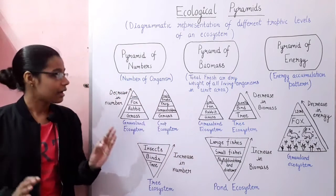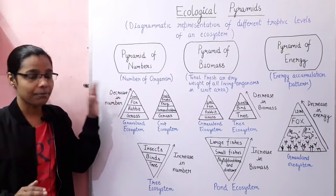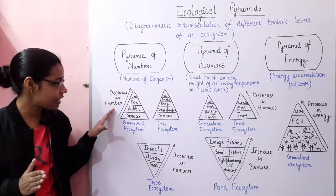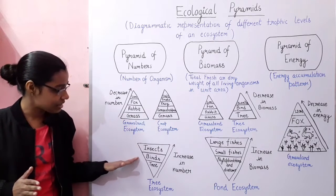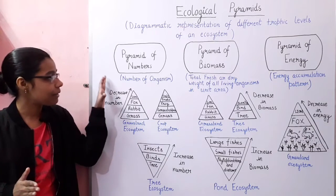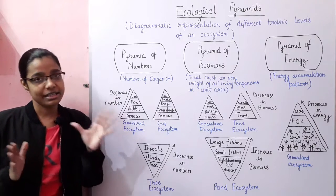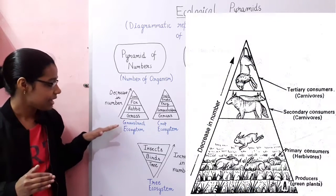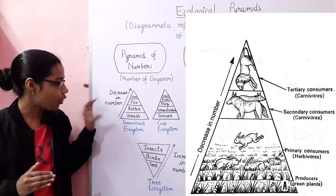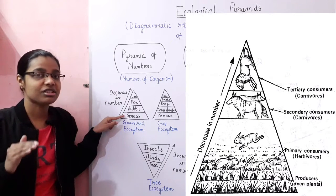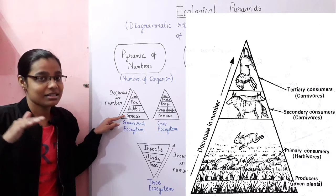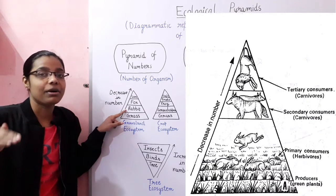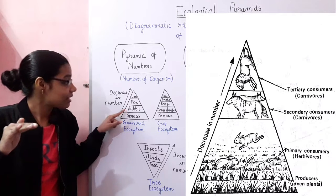Coming to the pyramid of numbers: this type of pyramid can be upright or inverted. Looking at the grassland ecosystem, the pyramid is upright because at the base the producers are the grasses, which have the highest number. The grasses are eaten by rabbits, which are lesser in number in comparison to the grasses.